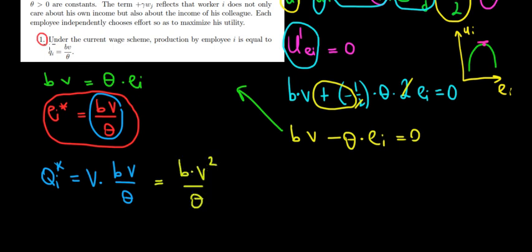What we can see here is that the output is B times V squared divided by theta — we only have B times V squared over theta. So the answer is false. Hope this makes sense and we are done.